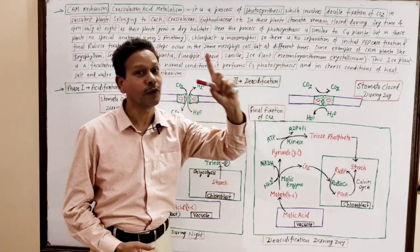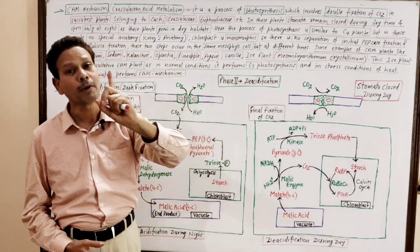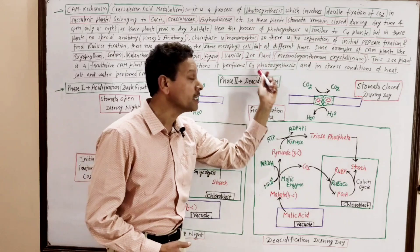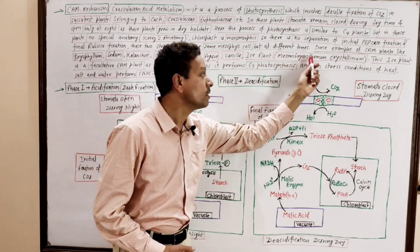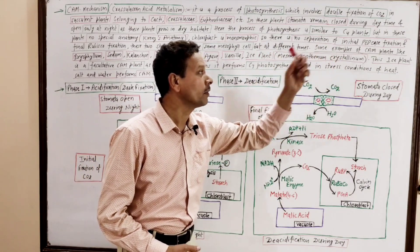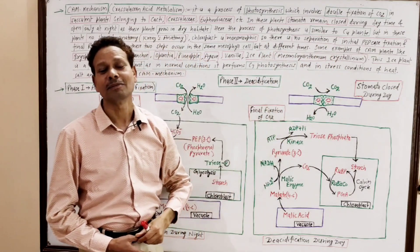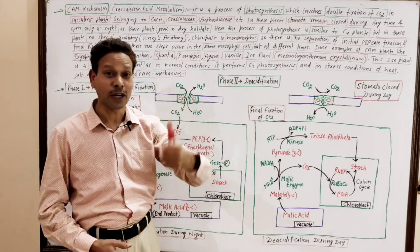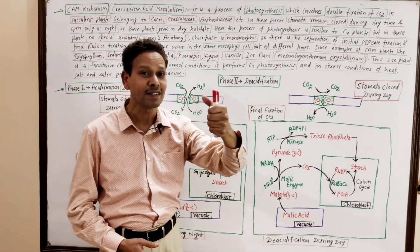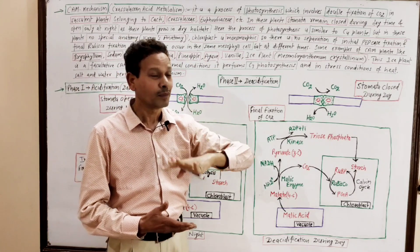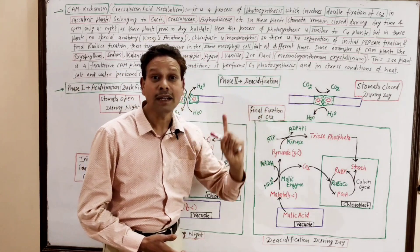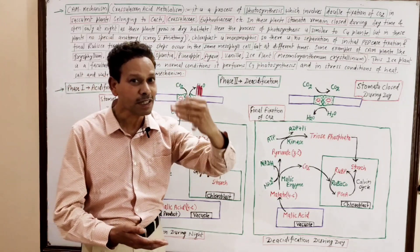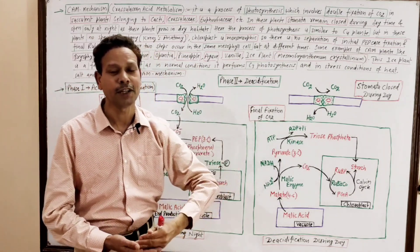A very important example, especially for NEET students, is the ice plant — Mesembryanthemum crystallinum. This ice plant is a facultative CAM plant. Note down: it is facultative, not obligatory — it is not a strict CAM plant.